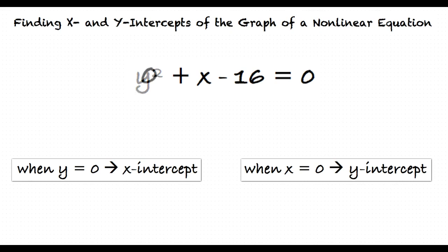Substituting 0 for y yields 0 + x - 16 = 0. Thus, we can add 16 to both sides to yield our x-intercept, x = 16.